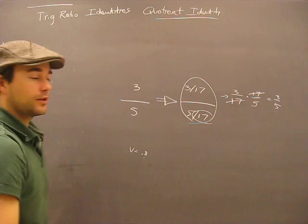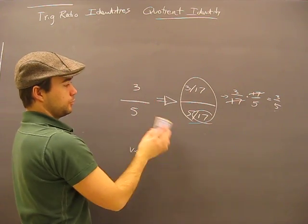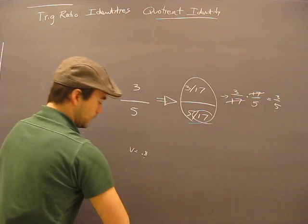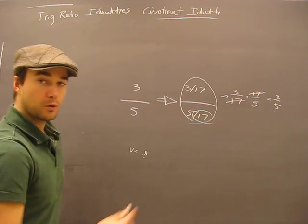That idea that we can divide the numerator and denominator by the same number and get the same value of a fraction is what I'm going to use to open with on this quotient identity.